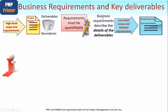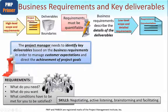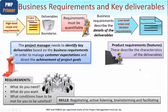Using the general term 'business requirements,' these describe the details of the deliverables. The project manager needs to identify key deliverables based on the business requirements in order to manage customer expectations and direct the achievement of the project goals. A good way of clarifying requirements is to ask: What do you need? What do you want? What conditions have to be met for you to be satisfied? The project manager's key skills here are negotiating, active listening, brainstorming, and facilitating.